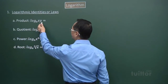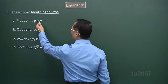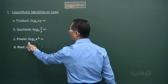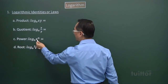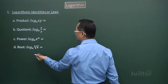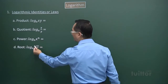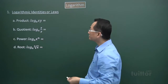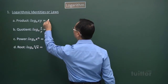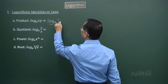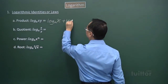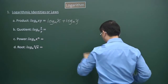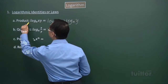For the product, we have x times y — log base a of the product x times y. For quotient, we have x divided by y. For power, we have x to the power of n, which is an index. For roots, we have the nth root of x. This way you can memorize more effectively. For the product, we think sum.